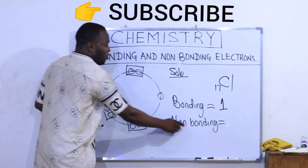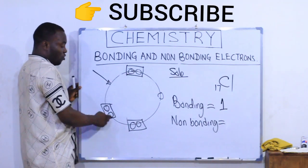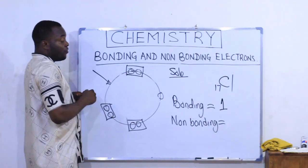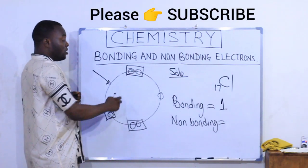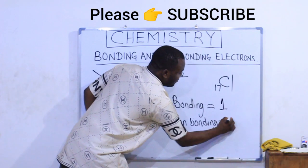For the number of non-bonding electrons, those ones that will not take part: these two will not take part, these ones will not take part, this one will not take part. So the total of non-bonding electrons are 1, 2, 3, 4, 5, 6. Six electrons.